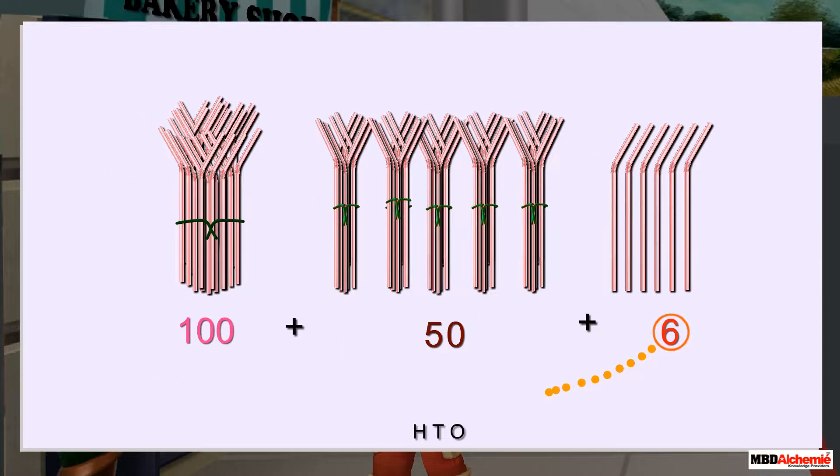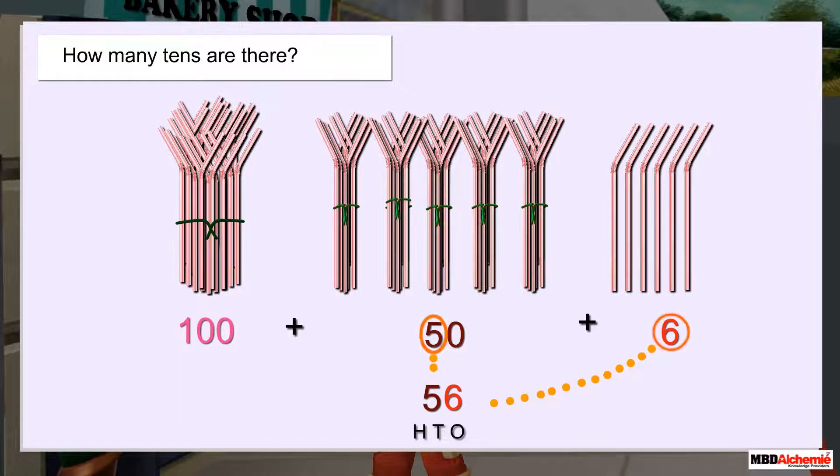There are six ones. So, six goes to ones place. How many tens are there? There are five tens. So, five goes to tens place.